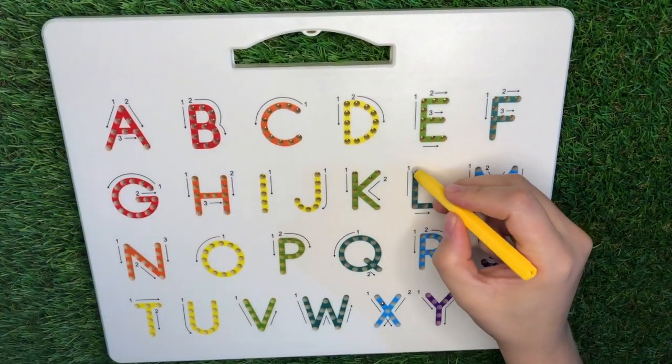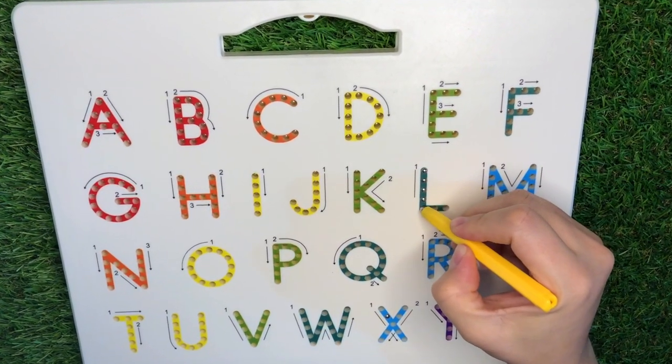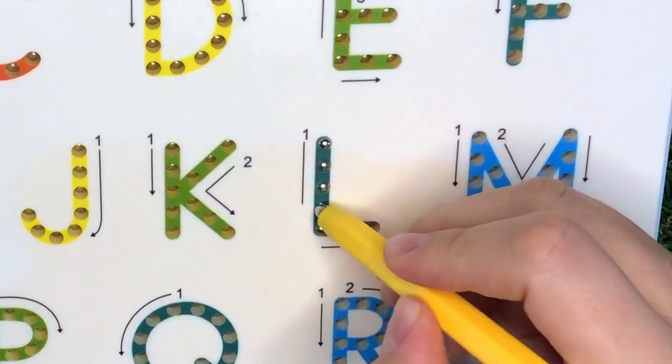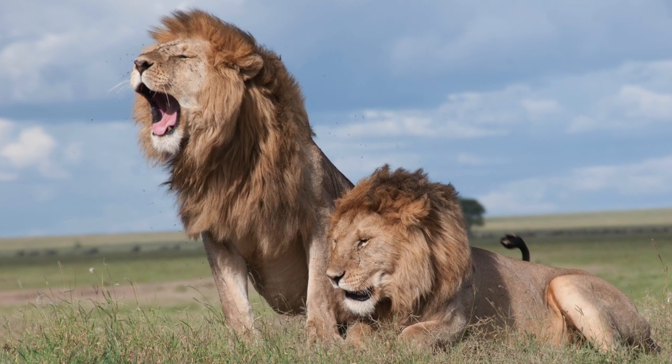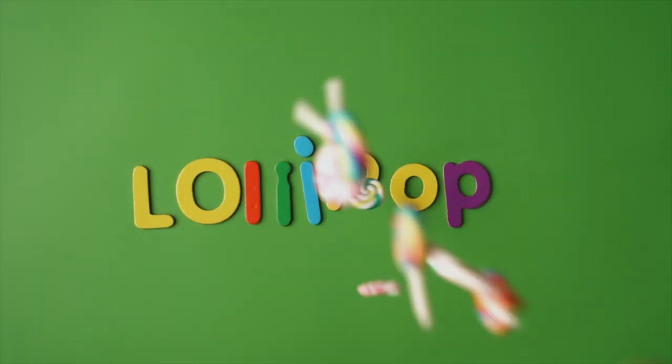Time to do the next letter, L. Pull down and across. L is for lion and lollipop.